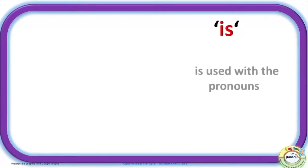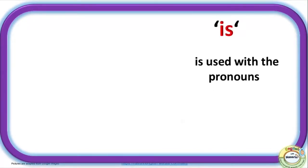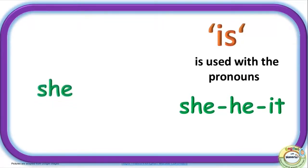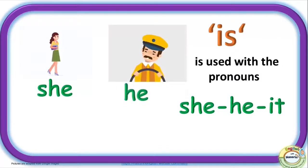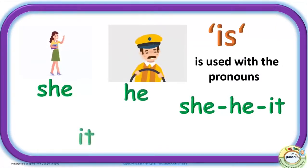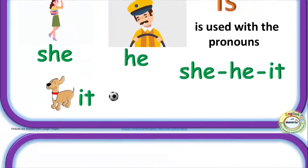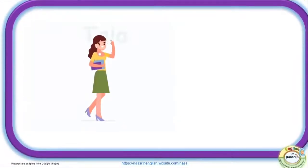Is. Is is used with the pronouns she, he, it. Let's look at some examples.